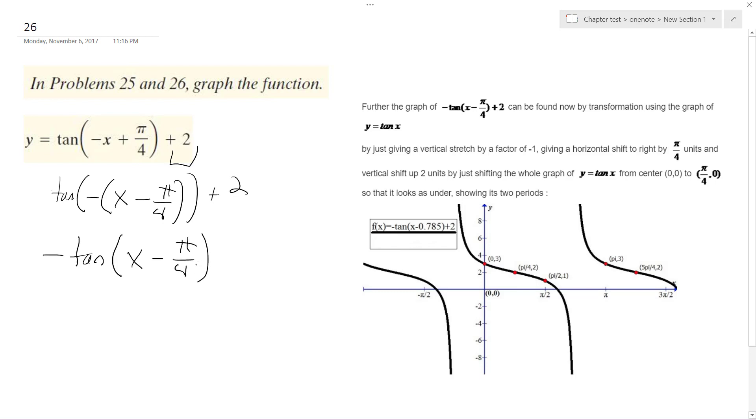So it's just a standard tangent graph shifted to the right pi over 4, as you can see here. That's just a trick I use because it makes it easier to graph, and then everything's shifted up 2.